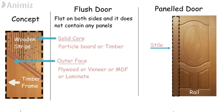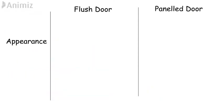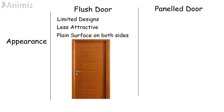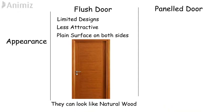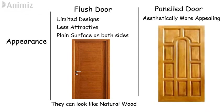Appearance: Flush door has limited designs and is less attractive than panel doors, as it has a plain surface on both sides. However, with a variety of veneer and laminate available, flush doors can also be made attractive and look like natural wood. Panel doors are aesthetically more appealing than flush doors; however, it will depend on quality and design.